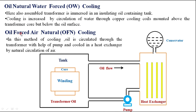The next method adopted is oil forced air natural cooling, that is OFAN cooling. In this method, oil is circulated through the transformer with the help of a pump and cooled in a heat exchanger by natural circulation of air. There is a separate heat exchanger unit and a pump. Instead of stagnant transformer oil, the oil is sucked using the pump, circulated through the heat exchanger where the heat is dissipated, and then the cooled transformer oil is returned to the transformer tank.